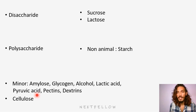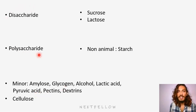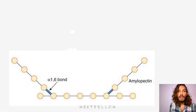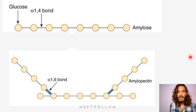I've seen options and questions come like this. So, the most important ones are disaccharide and polysaccharide. Now, you can take a look at this — this is a structure of amylopectin, and this is amylose.